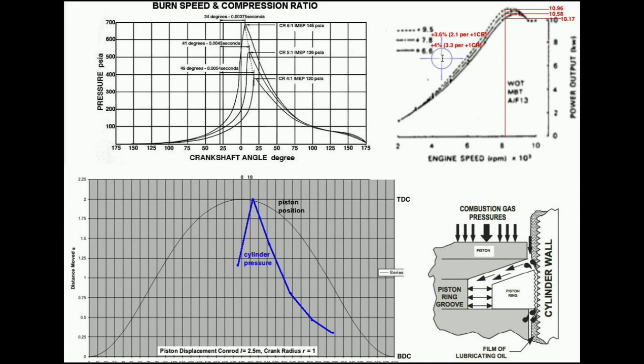From 6.6 to 7.8 there's only a 4% increase, and then from 7.8 to 9.5 there's a 3.6% increase. This right here shows the different peak combustion pressures, cylinder pressures, for different compression ratios.